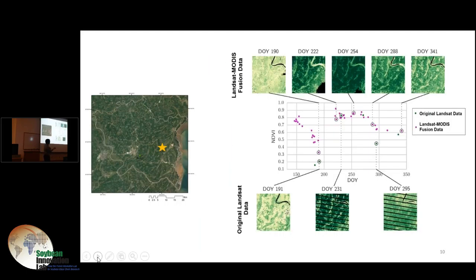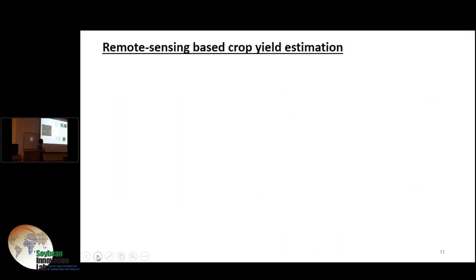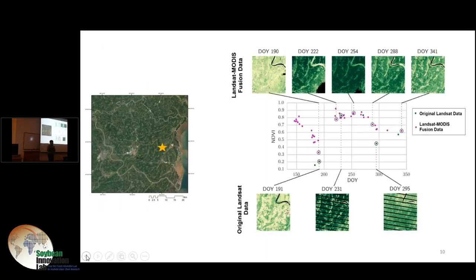This is NDVI, the x-axis is the time of year. If we only focus on original Landsat data, we only see these dark circled points, which is very sparse for that specific pixel. But if we leverage Landsat and MODIS data together and produce our fusion data set, we dramatically increase the data points over the growing season. We implemented this to the whole study domain, so we have time series of 30 meter resolution every day covering the whole study area.